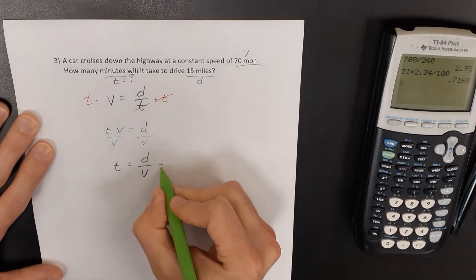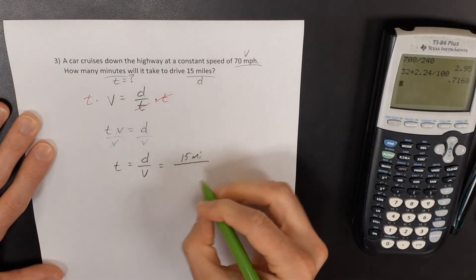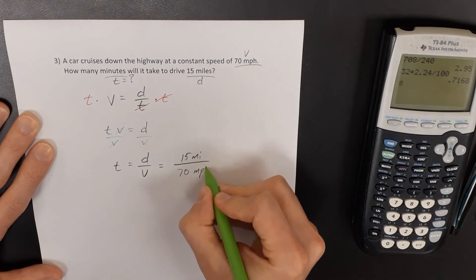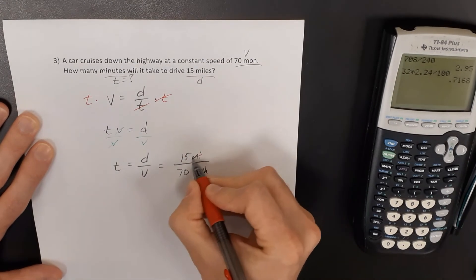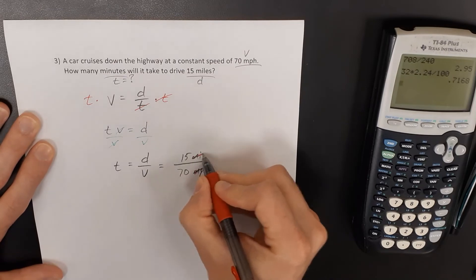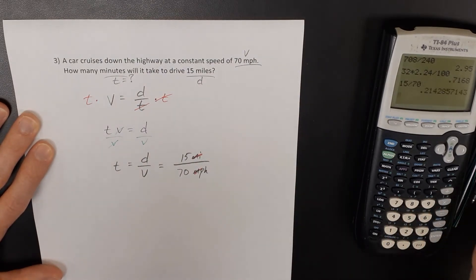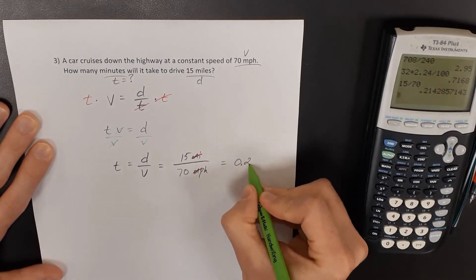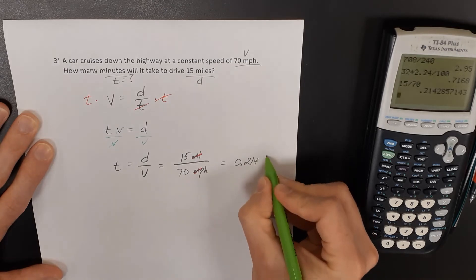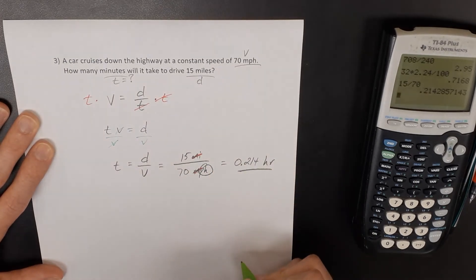So if I know I'm driving 15 miles and doing that at 70 miles per hour, well what's going to happen here, the miles are going to cancel out. And so 15 divided by 70 is 0.214, but this is measured in hours.